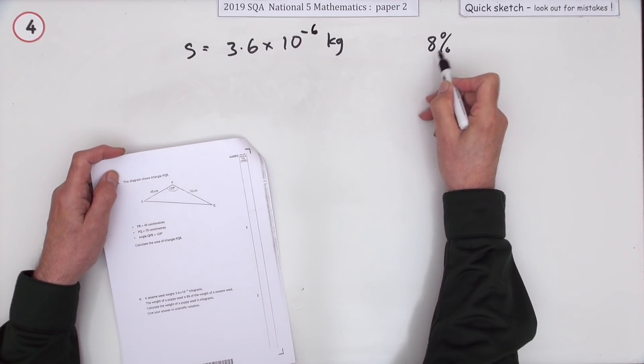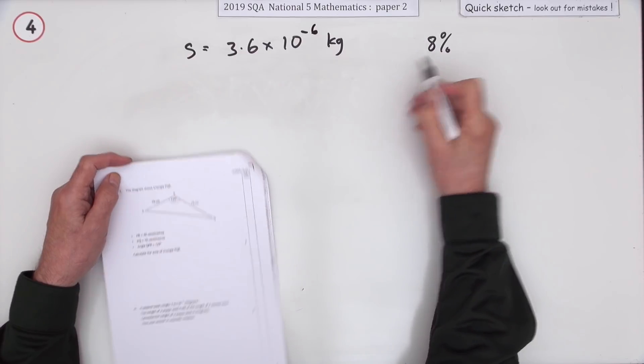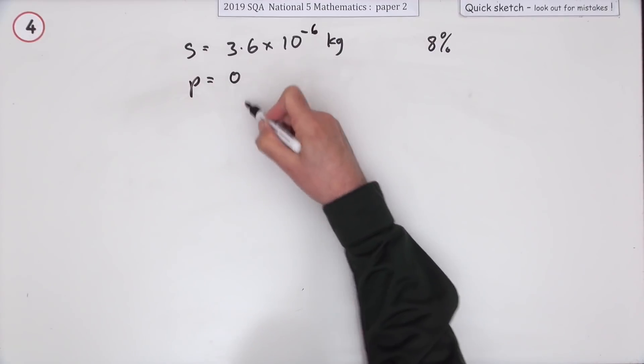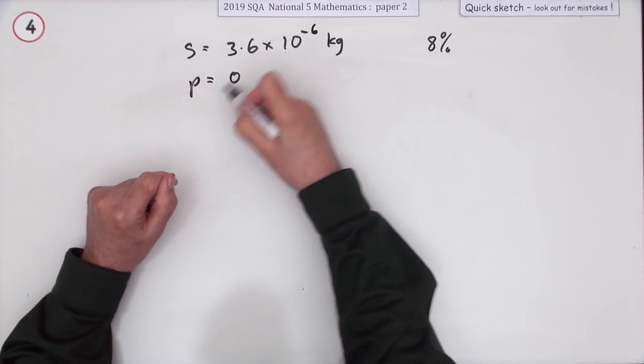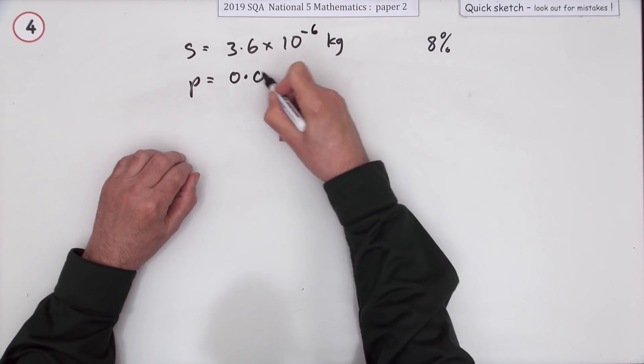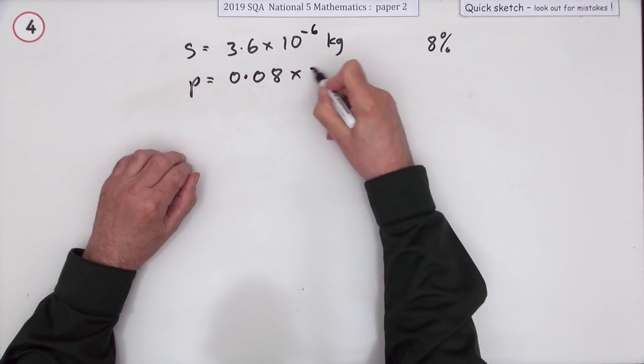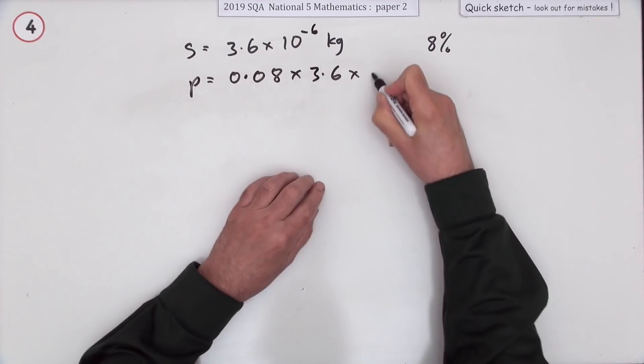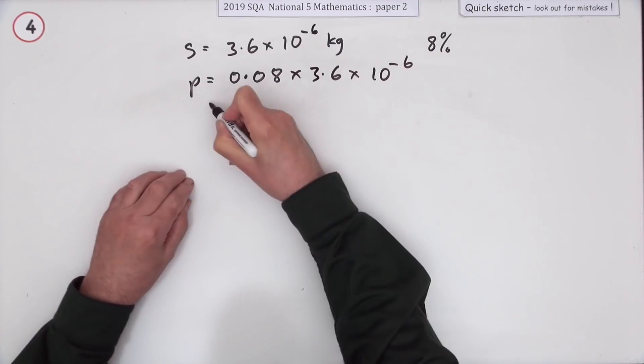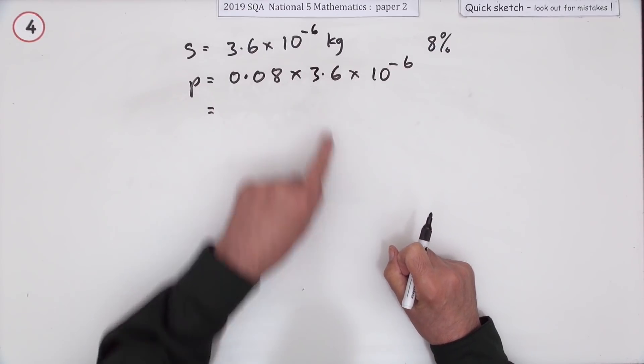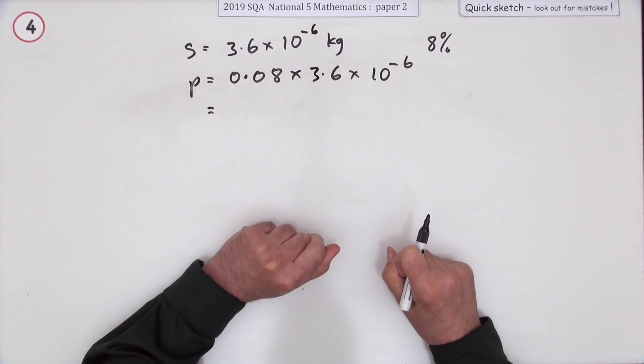So what does a poppy seed weigh? Well, you can either just put 8%, but this calculator would just take 8% and it would interpret that as 8 over 100. But I'm going to put it down as 8% as 0.08. So this is what I need to work out: 0.08 times 3.6 times 10 to the negative 6. See, normally you would have to do that by hand and then readjust the position of the point to make it into scientific notation, but you don't need to.